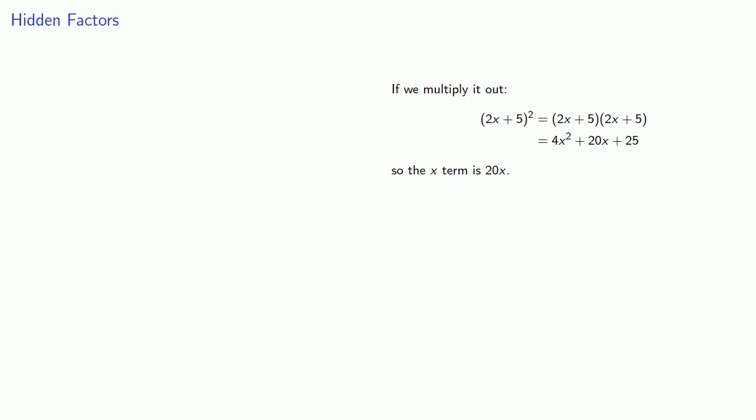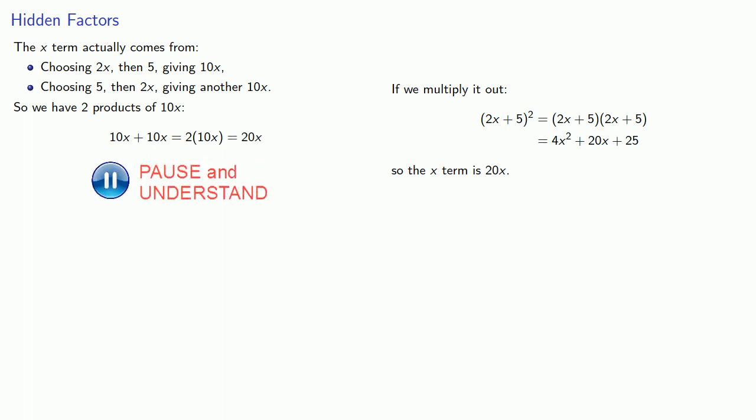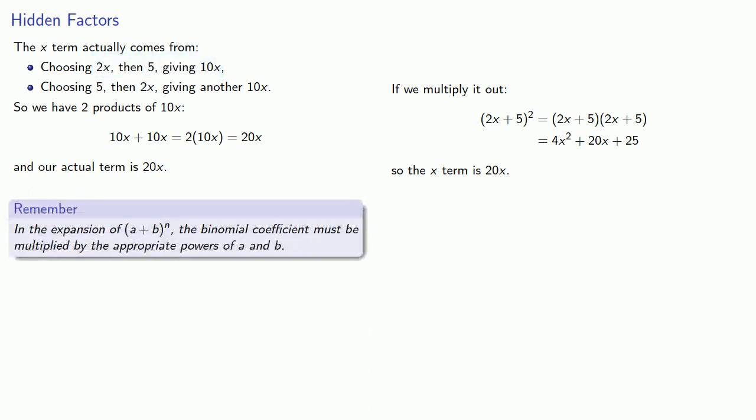Let's think about that a little bit more. The x term actually comes from choosing 2x and then 5, which gives us 10x. We could also choose 5, then 2x, which gives us another 10x. So in fact, we have two products of 10x, and that's 10x + 10x, which is 20x. Our actual term should be 20x. And here's the thing to notice: that 2 that we got from the binomial coefficient is here as part of our product, but the rest of it comes from the factors themselves. So remember, in the expansion of (a + b)^n, the binomial coefficient must be multiplied by the appropriate powers of a and b.